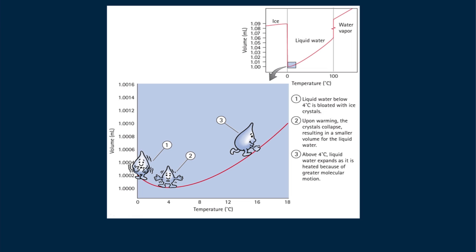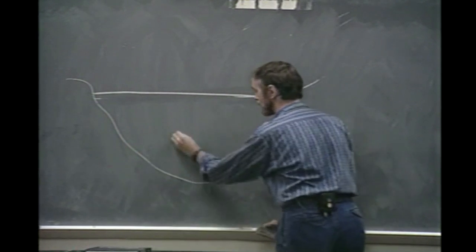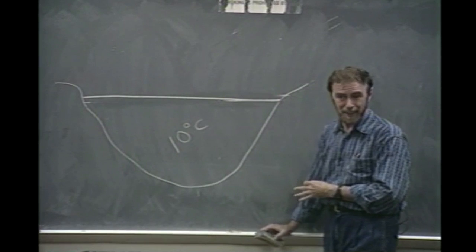Ponds and lakes freeze from the surface downward. Let's see how I treat this idea in class. Here's a lake. Let's suppose that lake is 10 degrees above freezing. What's the temperature which freezing takes place? Zero.